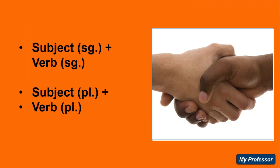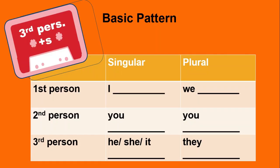What does that mean? It means that singulars go with singulars and plurals go with plurals. If we have a singular subject, then it needs to agree with the form of the verb that is also singular. If we have a plural subject, then it needs to agree with a verb that has a plural form. This is the basic pattern.